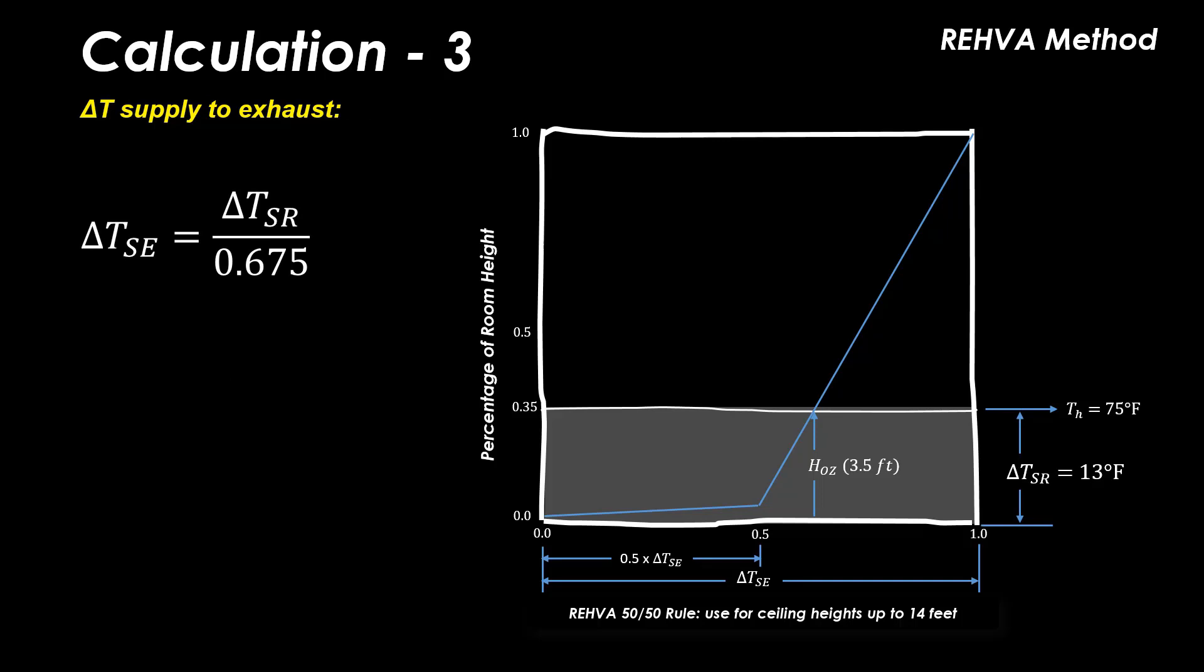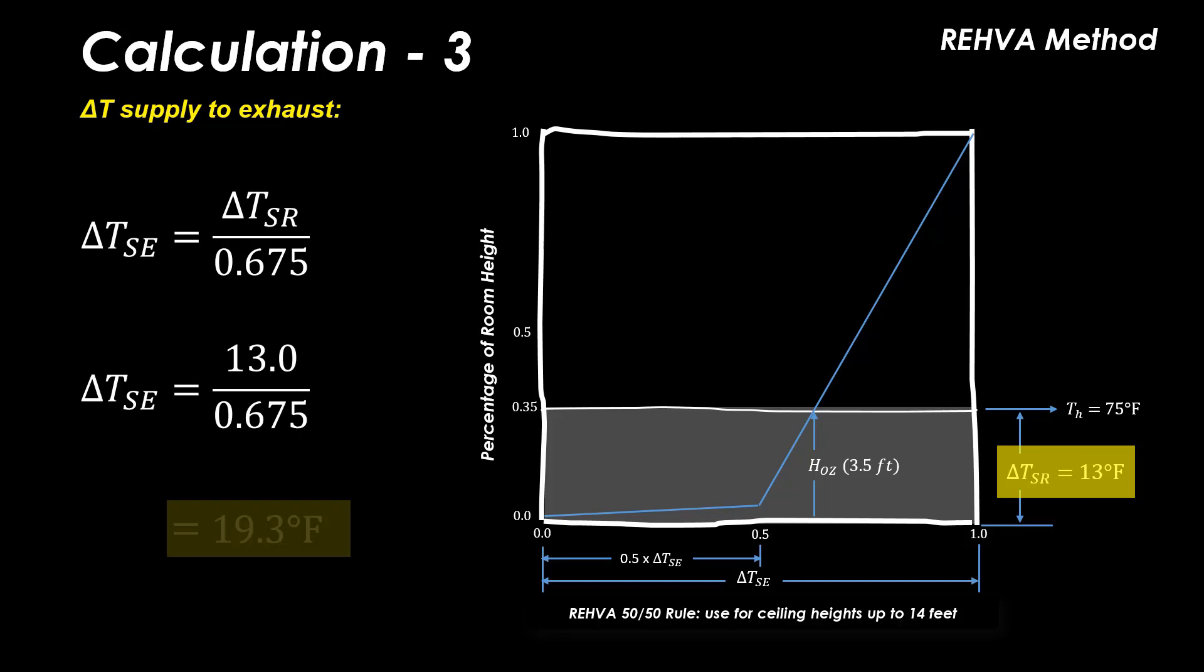Using the percentage of temperature gradient from the supply air outlet to head height, we can now calculate the exhaust or return air temperature differential, which is delta TSE by dividing delta TSR from calc 1 by 0.675. The result is 19.3°F.